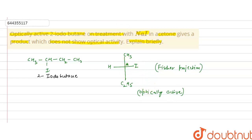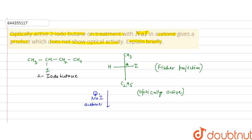Now on treatment of 2-iodobutane with sodium iodide in the presence of acetone — NaI in acetone gives Na⁺ and I⁻ — this will be an SN2 reaction, that is substitution nucleophilic bimolecular.